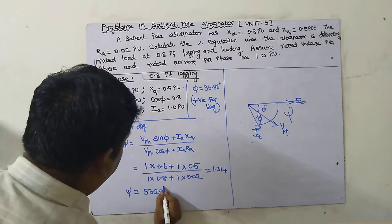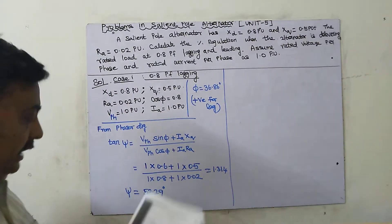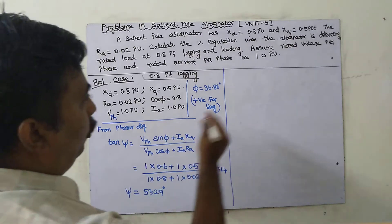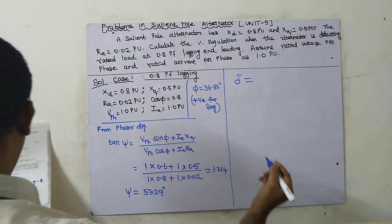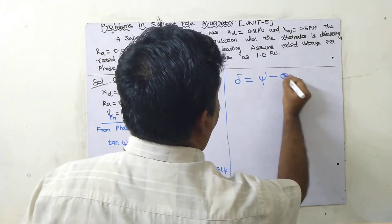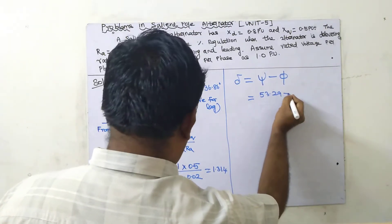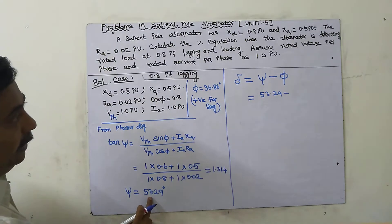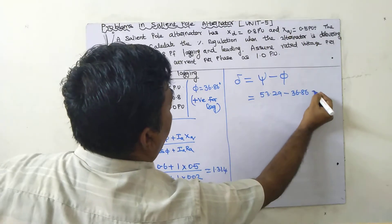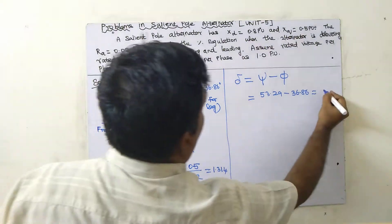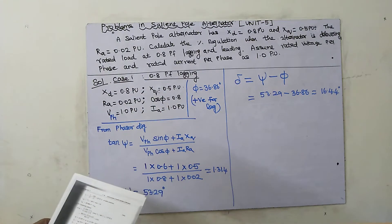We get ψ = 53.29°. From this, we calculate the load angle δ using the formula δ = ψ − φ = 53.29° − 36.86° = 16.44°. This is the delta (load angle) value.